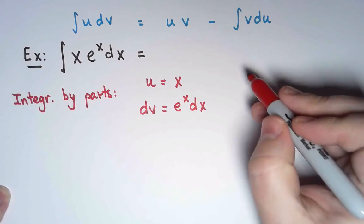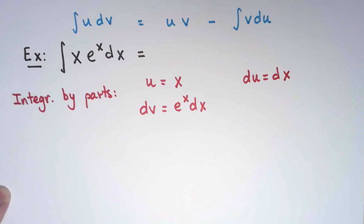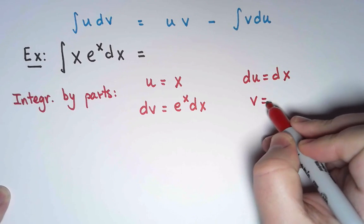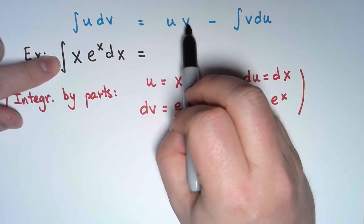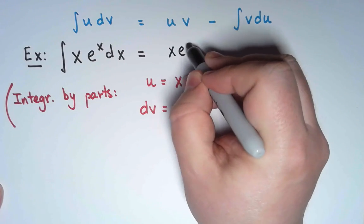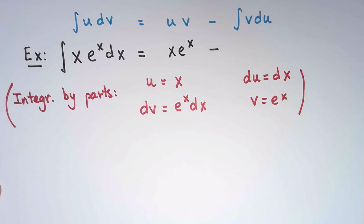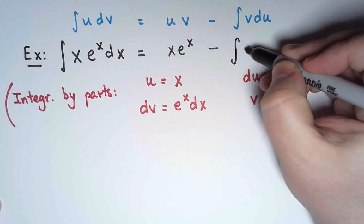If u is x, then du is dx. And if dv is e to the x dx, then v is simply e to the x. Okay then. What happens to my integral? It becomes u times v, which is x e to the x, minus the integral of v du, which is e to the x dx.